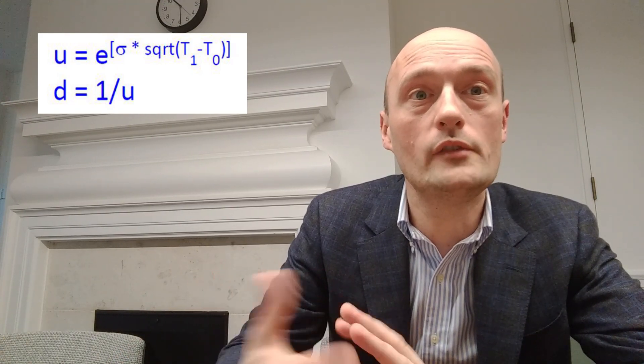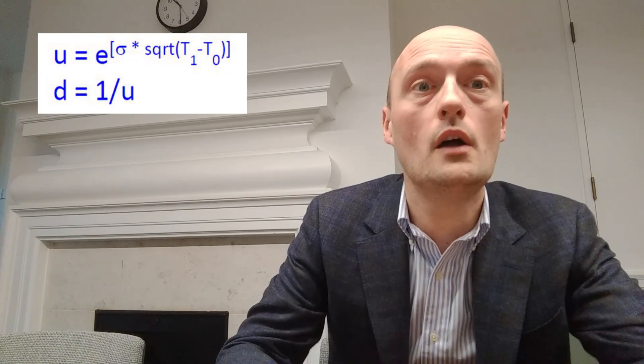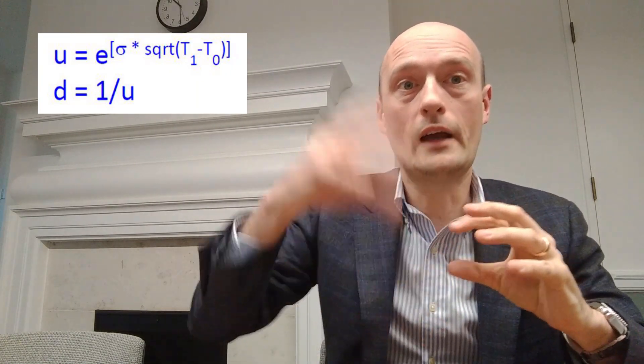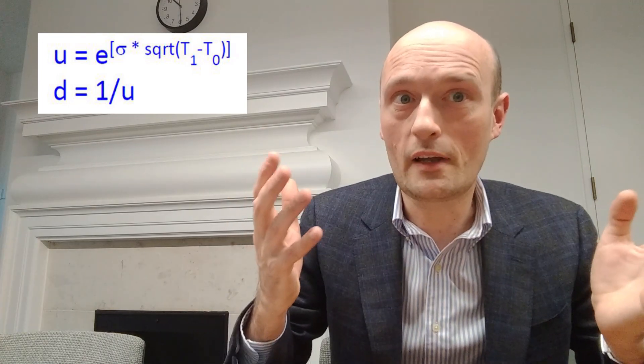So essentially, we've now worked out that if we know the price of something and how much it wiggles around, its standard deviation, how much it moves, we're able to come up with a reasonable price for an option on it, a derivative on it. And in fact, it doesn't even have to be something like a call or a put option. It can just be a payout.